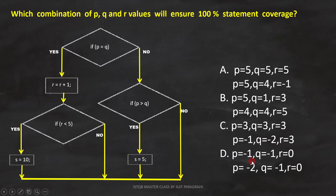Now let's see what we have to find in this question: which combination of p, q, and r values will ensure 100% statement coverage? That means we have to analyze all the options one by one to find which one will cover 100% statement coverage.